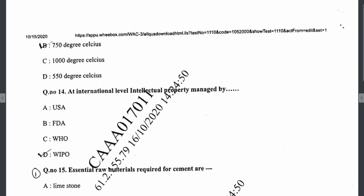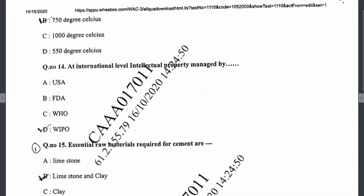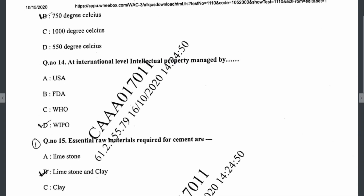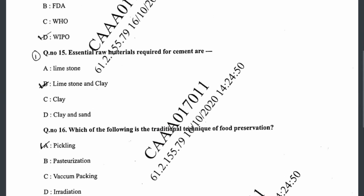Question fourteen: at the international level, intellectual property is managed by WIPO. Question fifteen: the essential raw materials required for cement are limestone and clay. Question sixteen: the traditional technique of food preservation is the pickling process.